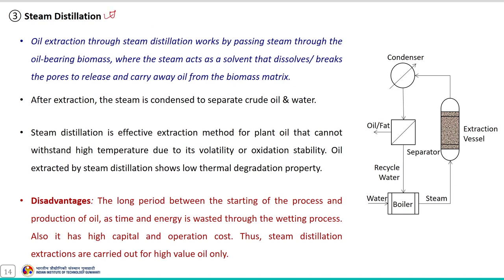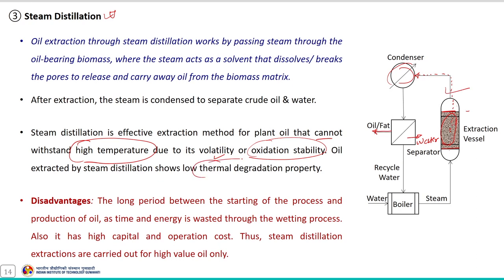Next is the steam distillation method. Oil extraction through steam distillation works by passing steam through the oil-bearing biomass packed in an extraction vessel, where the steam acts as a solvent that dissolves and breaks the pores to release and carry away oil from the biomass matrix. After extraction the steam is condensed to separate the oil or fat from water. This is a very effective method for plant oils that cannot withstand high temperature due to their volatility or oxidation stability. Oil extracted by steam distillation shows low thermal degradation properties.